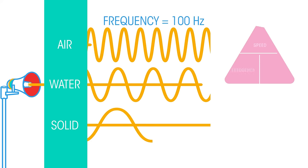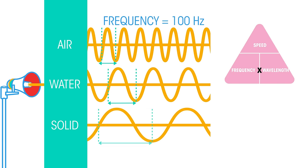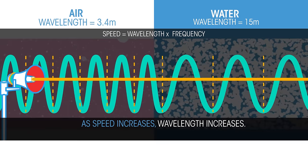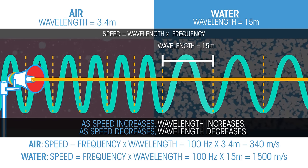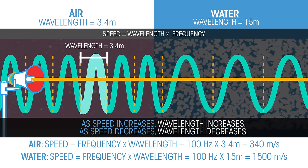When the speed of sound changes as it enters a different medium, the frequency remains the same, but the wavelength changes. The frequency cannot change as it is set by the source of the sound. So as speed increases, wavelength increases. As speed decreases, wavelength also decreases.